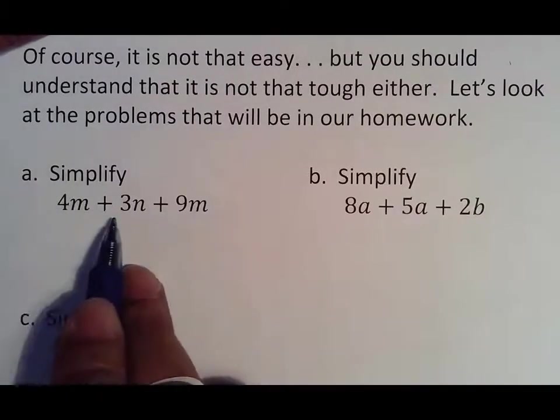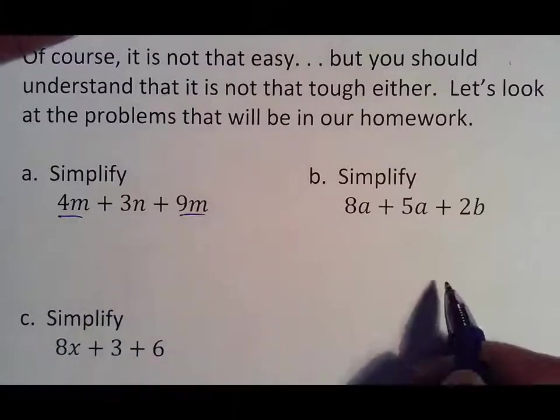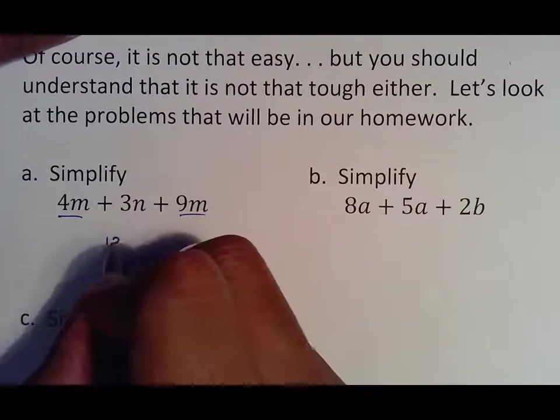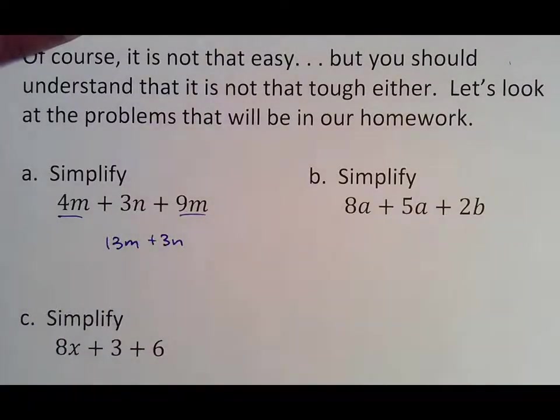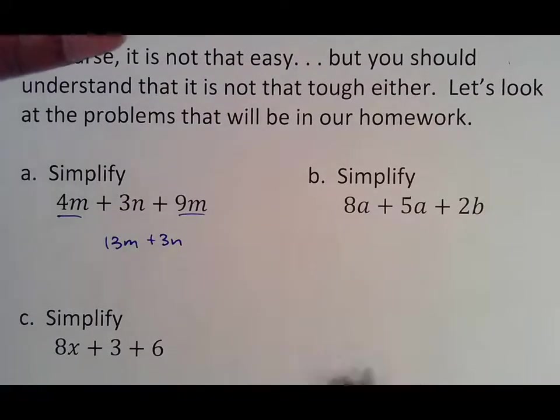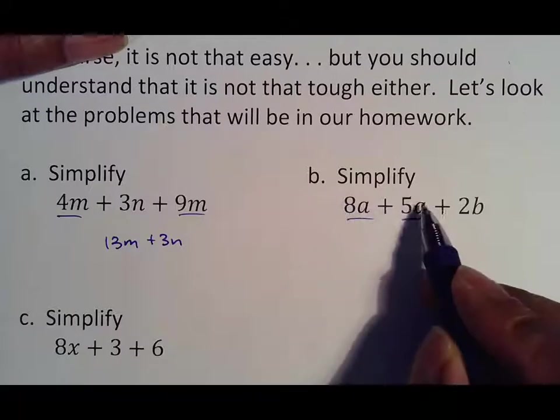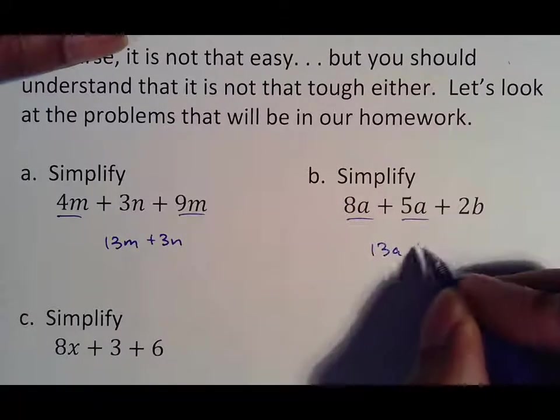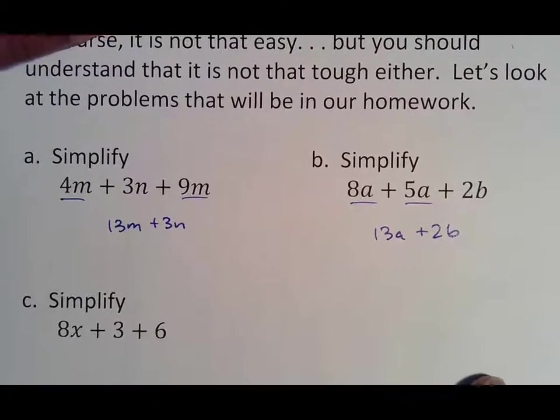When you read this, is there anything that can be combined? In this case, I see the m's can be put together. So 4 and 9 make 13m, and then 3n just comes down because nothing changed about it. You still had 3n's no matter what. In the second example, I recognize that these 2a's can be put together. 8a's and 5a's make 13a's, and 2b just comes down along for the ride because you cannot combine it with anything.